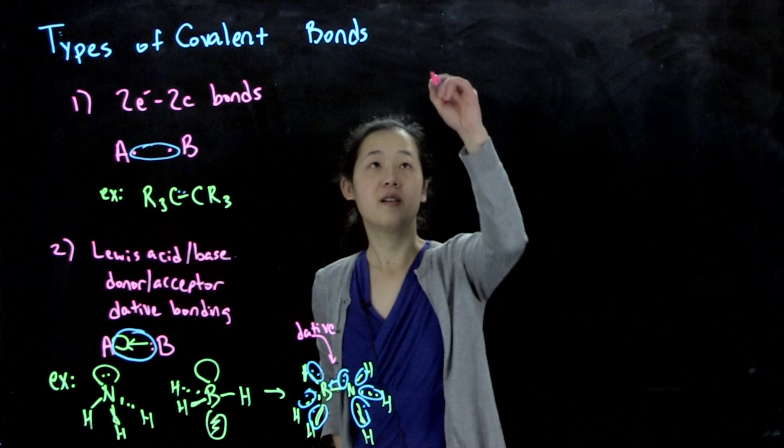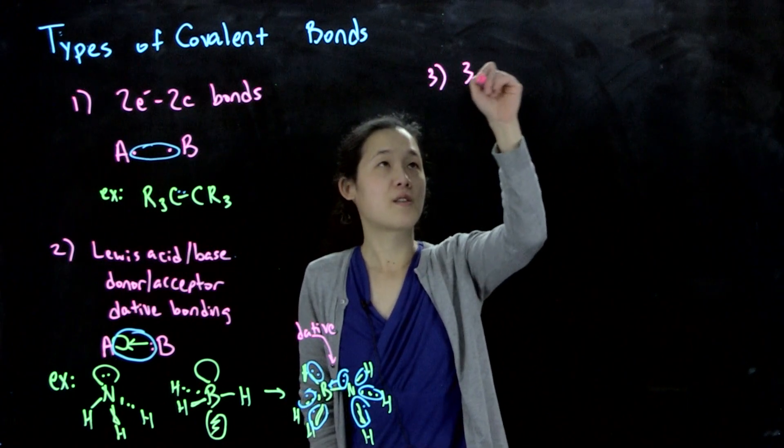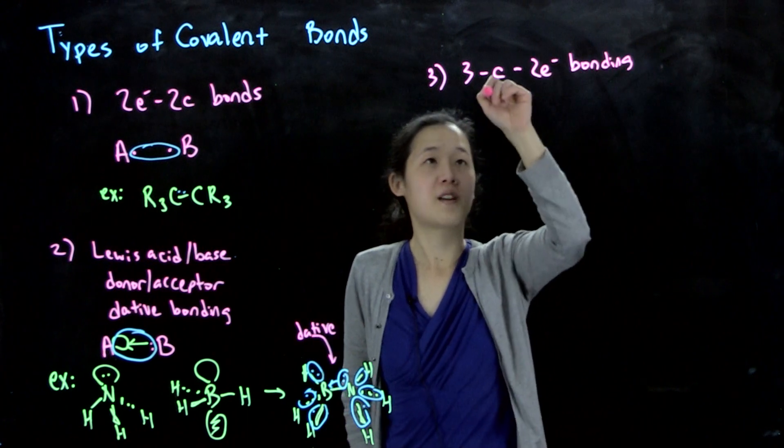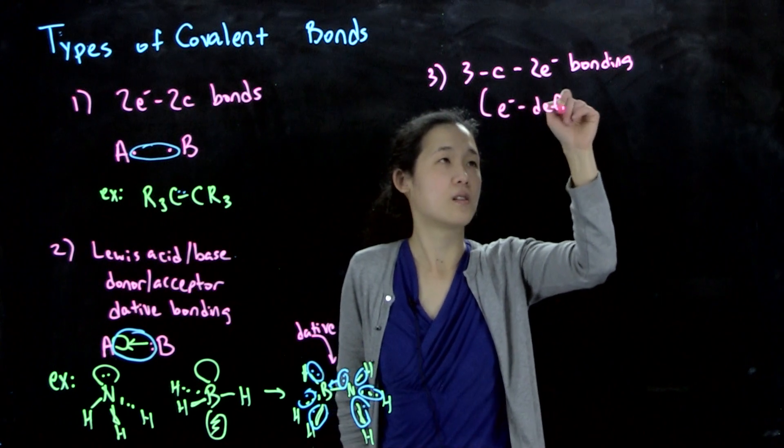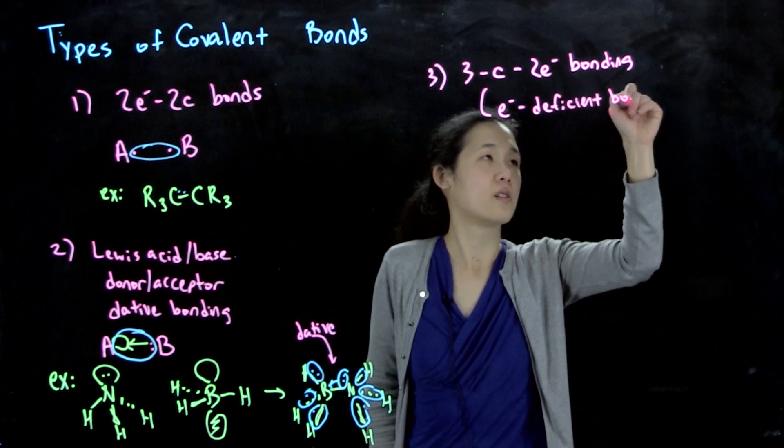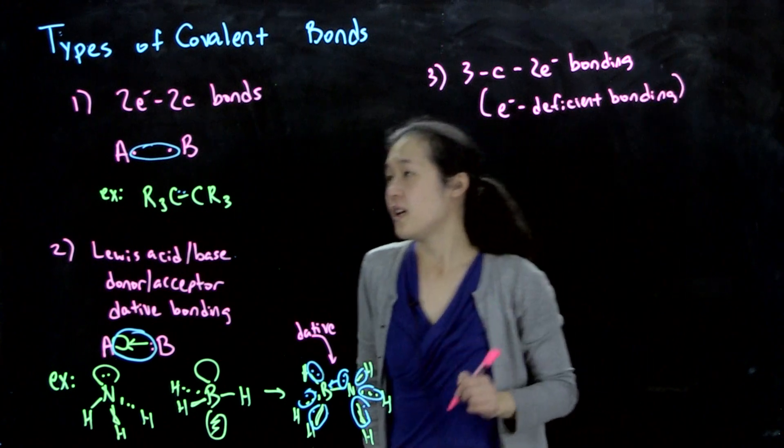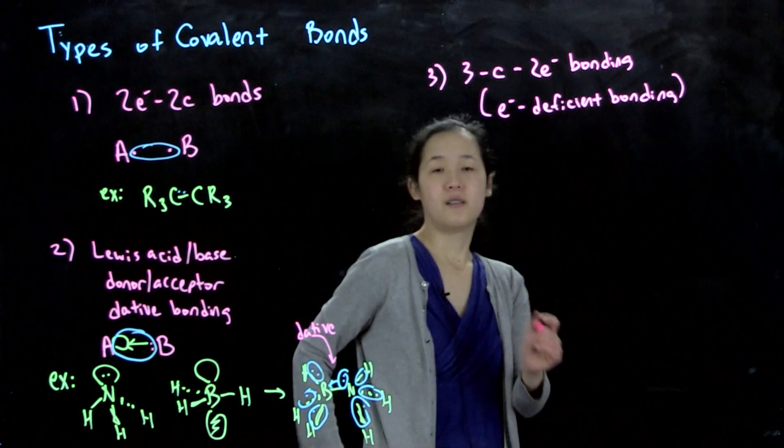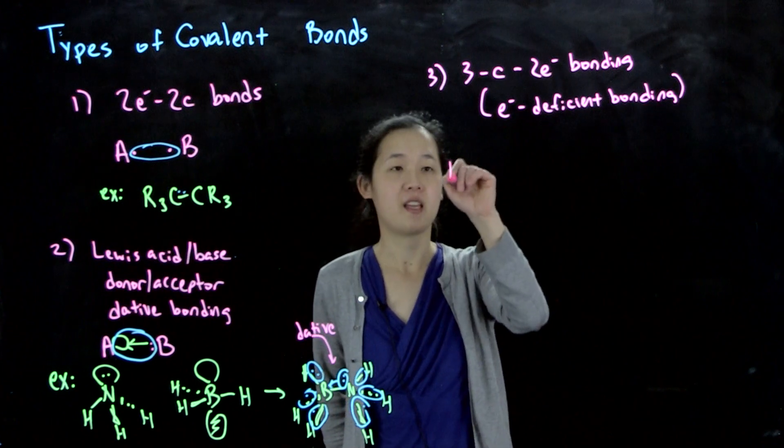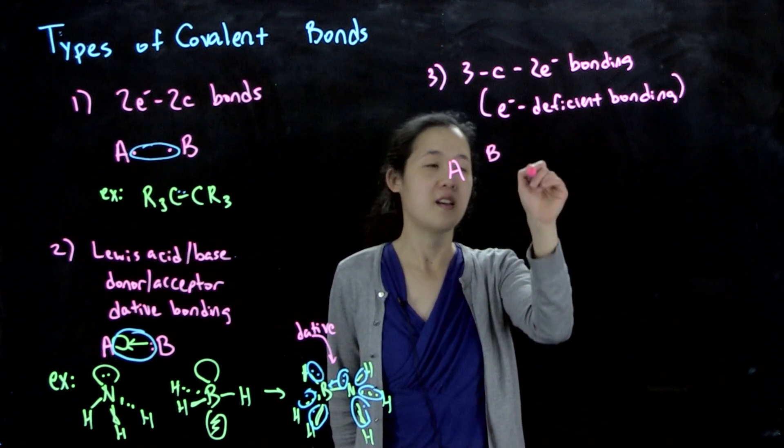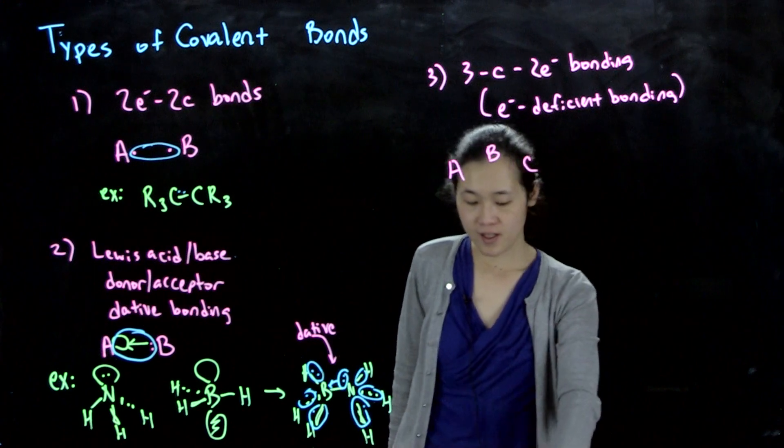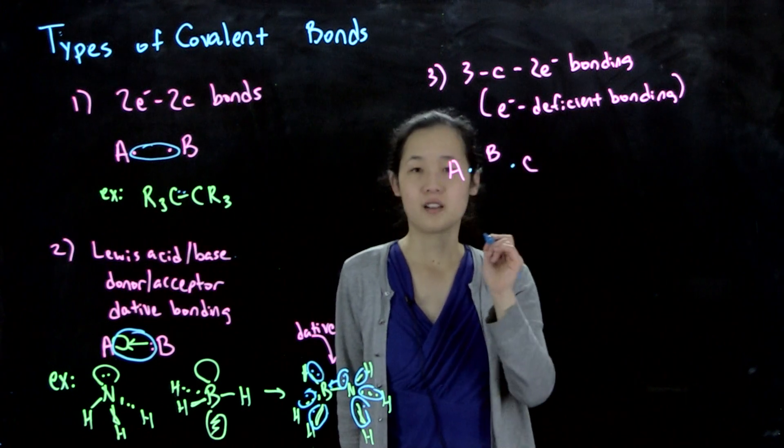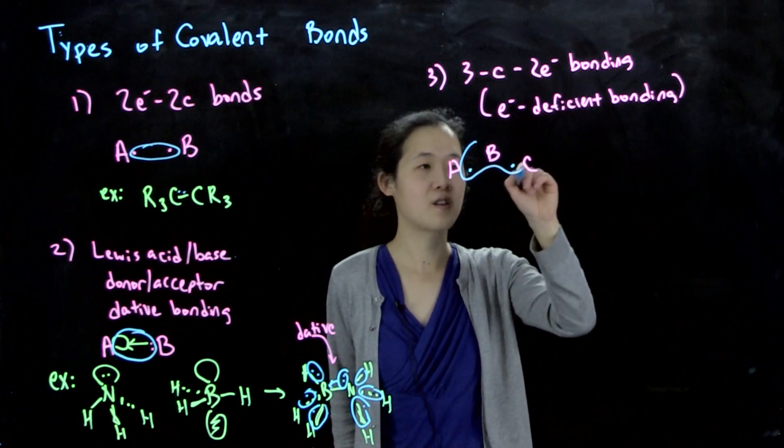The third type is called three center two electron bonds, or electron deficient bonding. This happens when we have three centers: A, B, and C. In this situation, we have two electrons shared over all three of those centers.